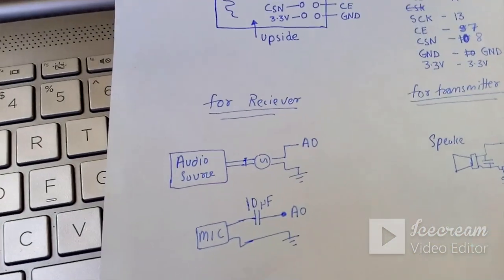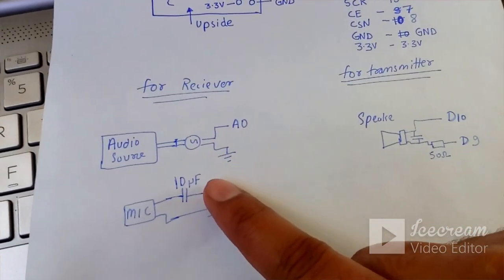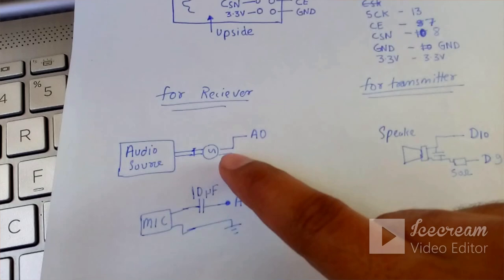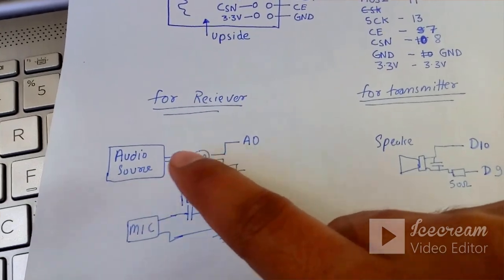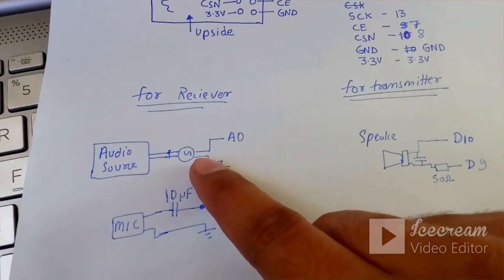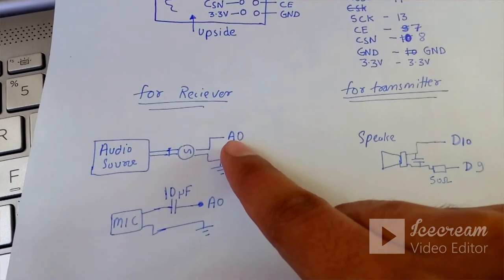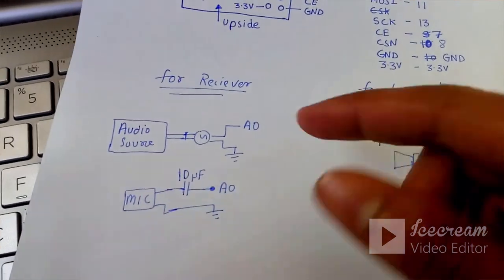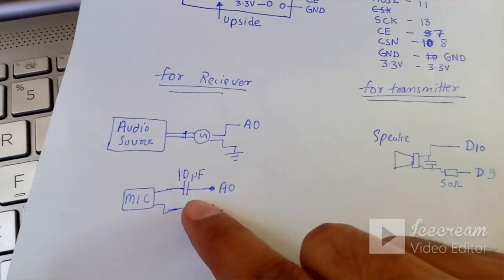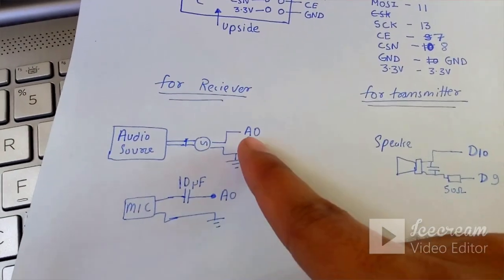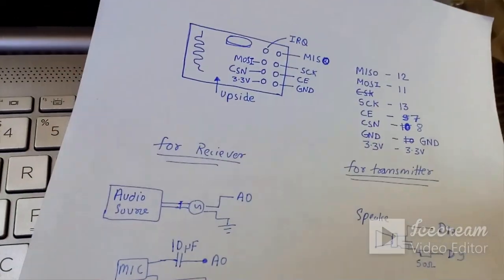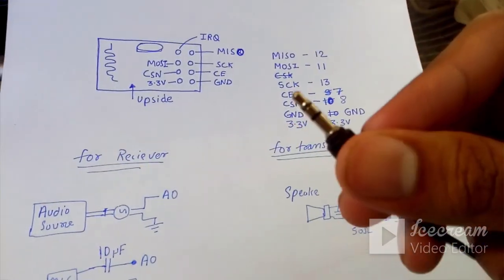Okay, so these pins to the Arduino are same for both transmitter and receiver. What's the difference? For receiver, what you have to do is your audio source must be connected. It's going to have two points, so you have to connect one of them to the A0, that is analog pin of Arduino, and another to the ground. And to get a better quality you can use 10 microfarad capacitor in between A0 to your mic or whatever your audio source. For mine it is this kind of aux.